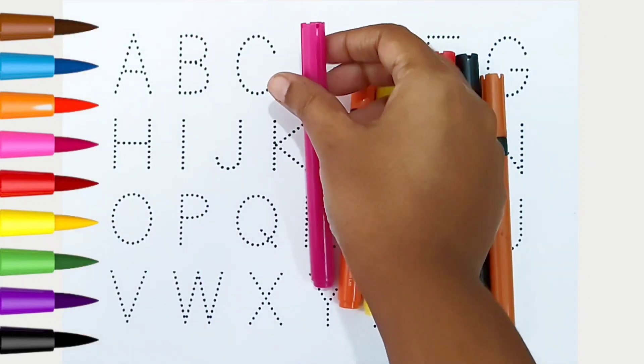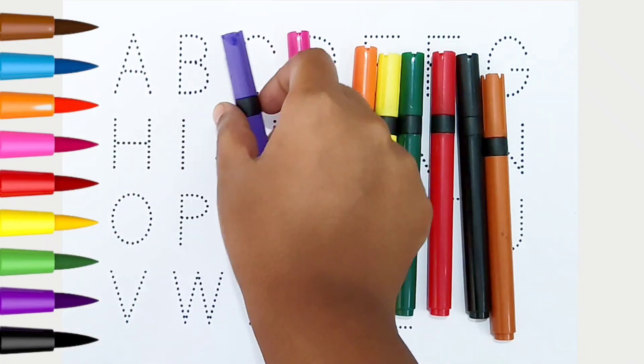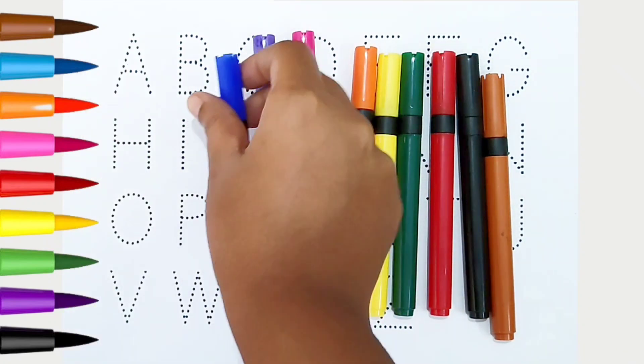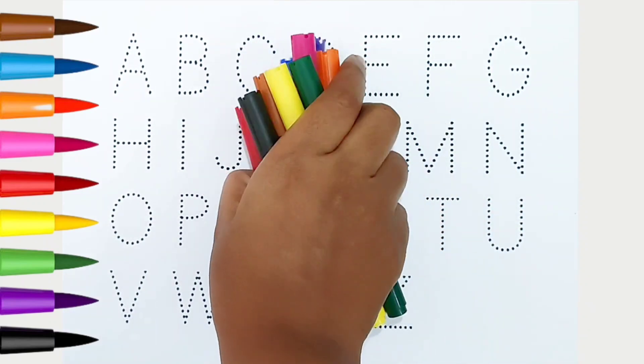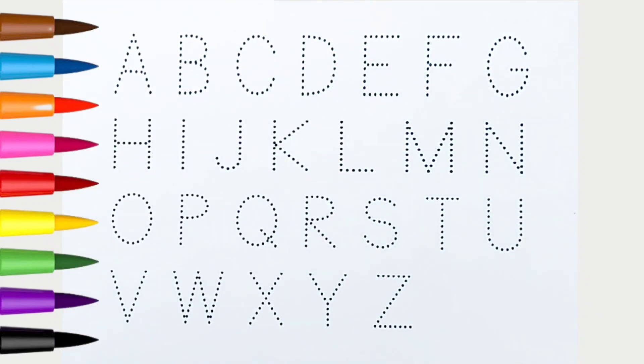Pink color, violet color, blue color. Hi kids! Today we can learn the alphabets from A to Z. Let's begin!